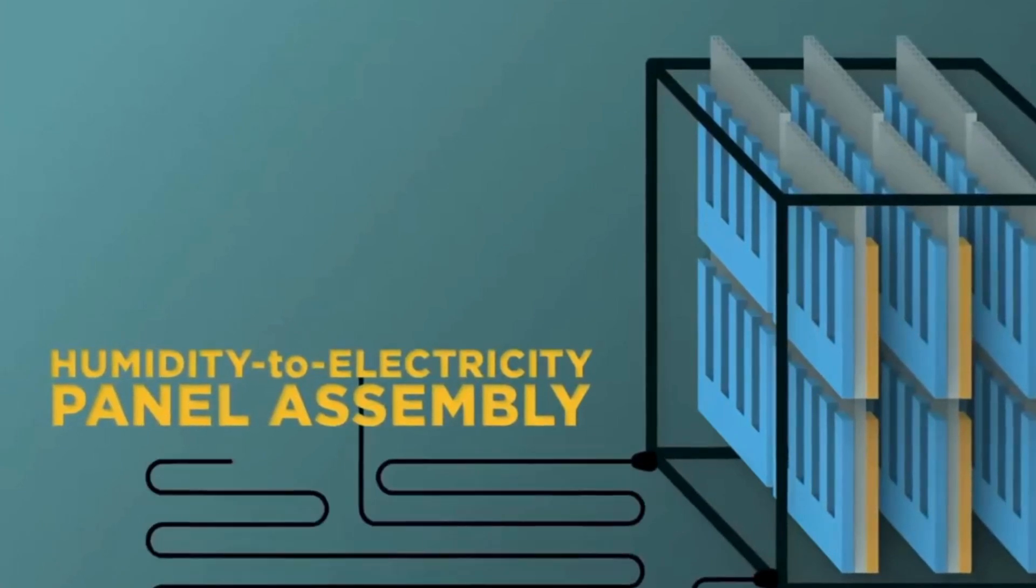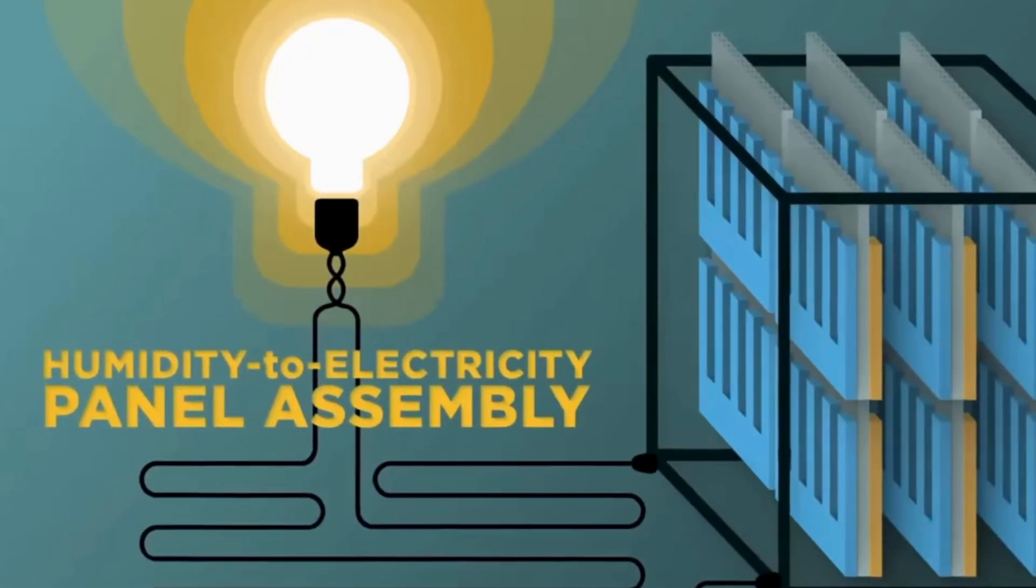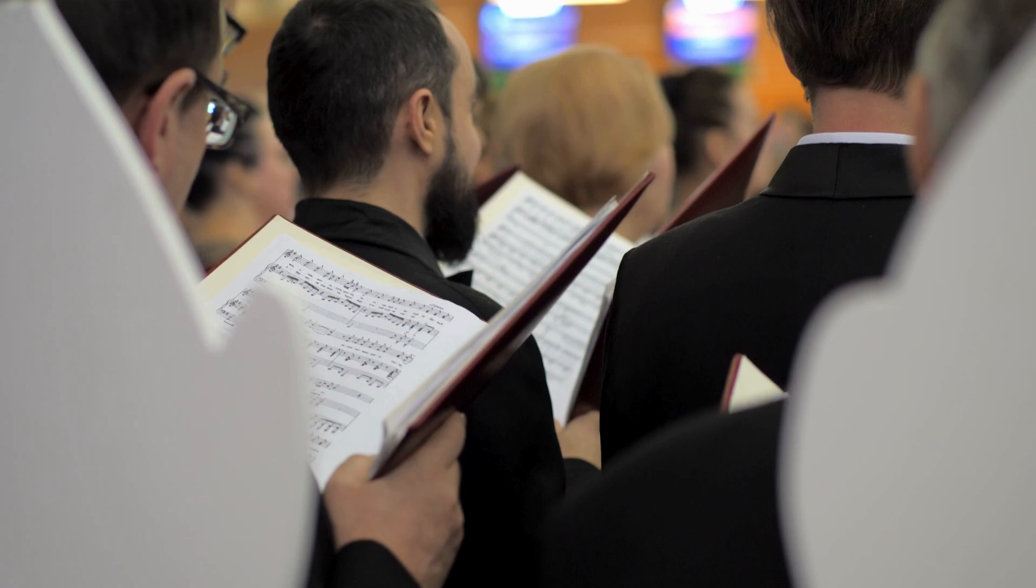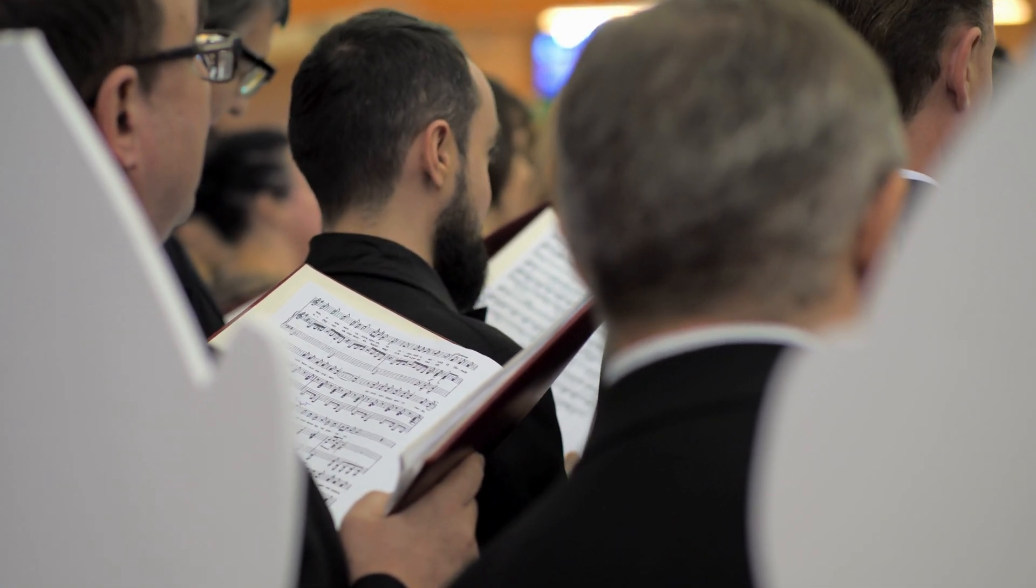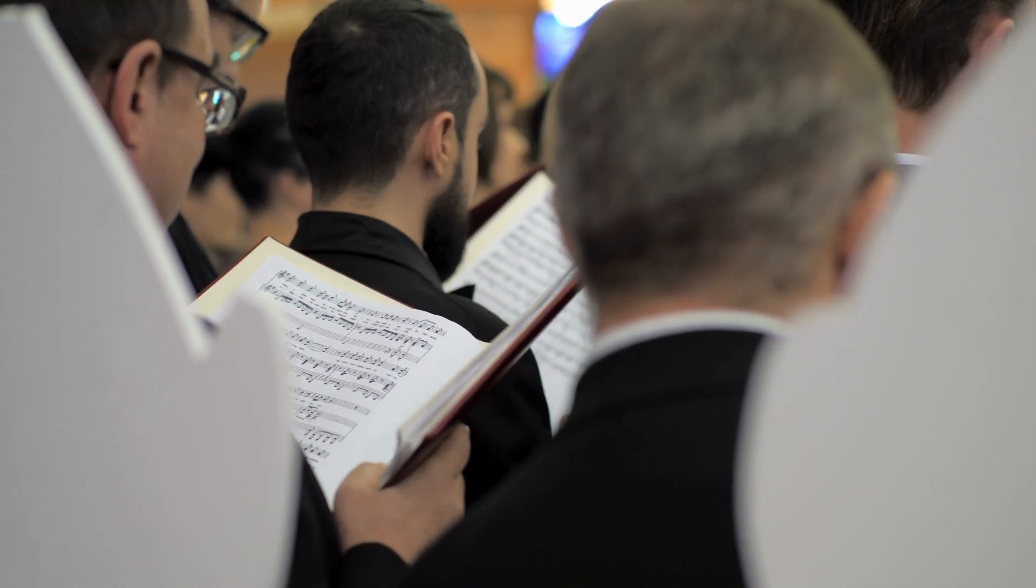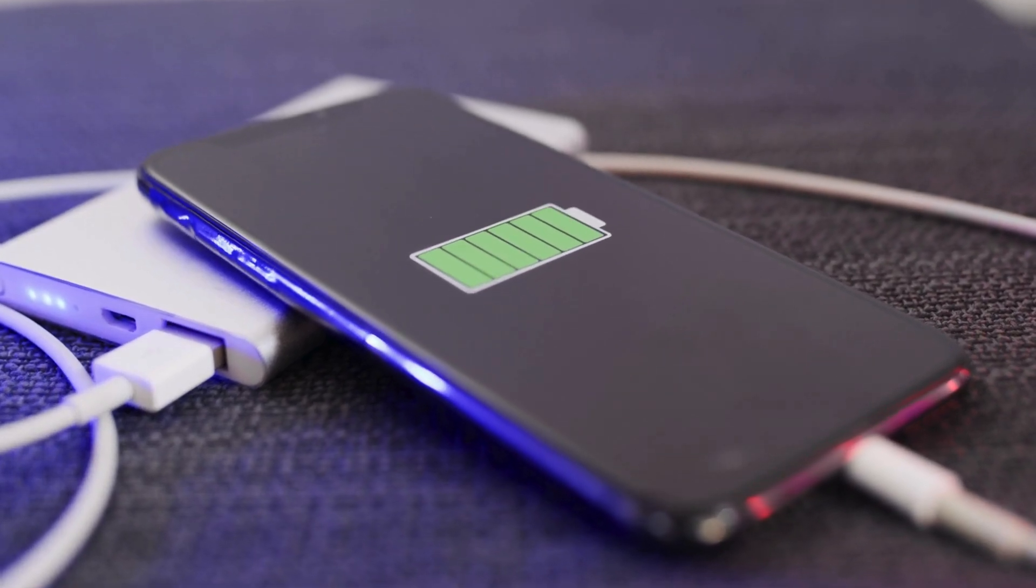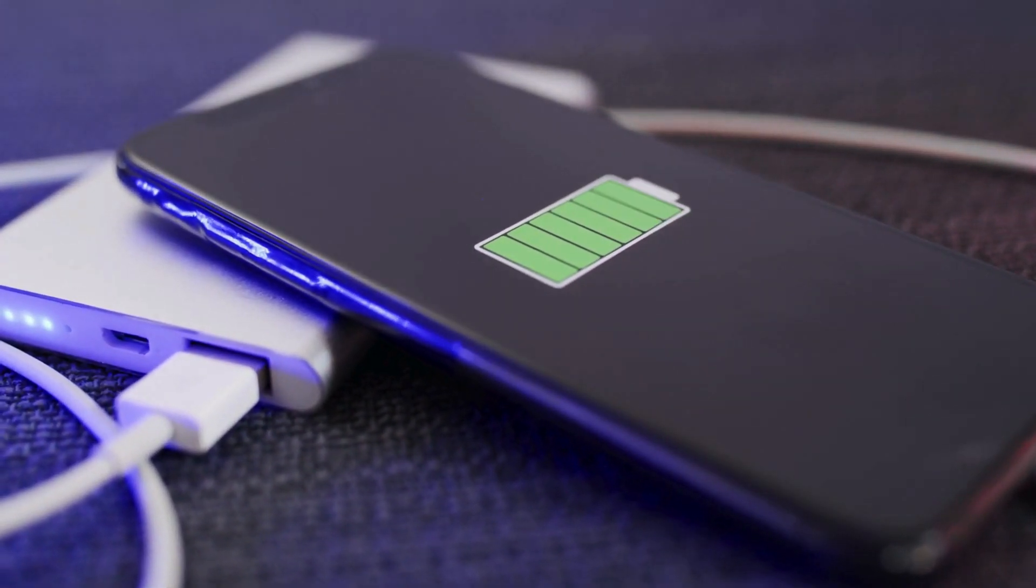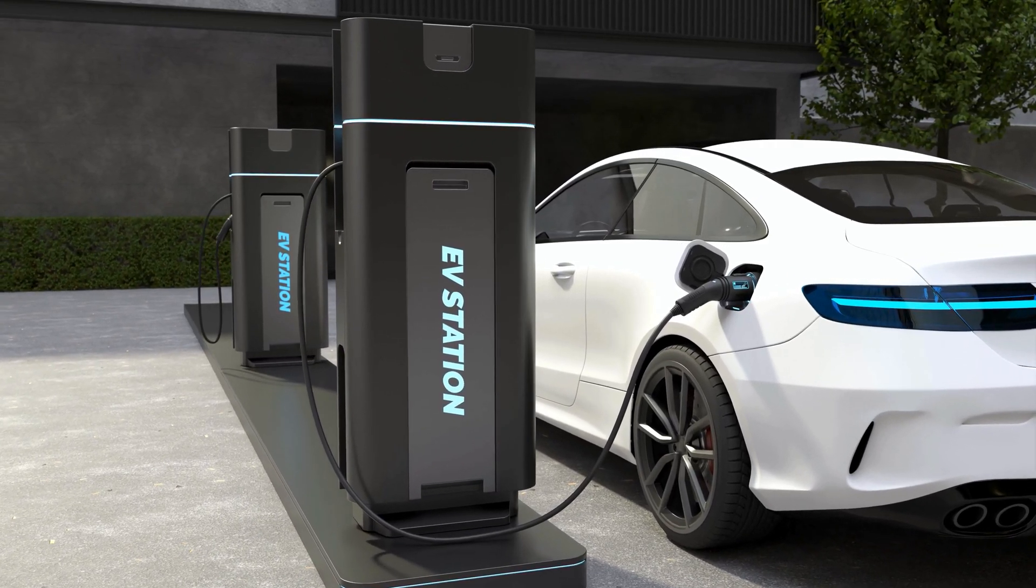Despite the groundbreaking nature of the UMass AirGen device, it currently produces only a microwatt of electricity, sufficient to light up a single LED pixel, but not enough for the broader energy demands of our world. Yet, its small output masks its vast potential. Like a chorus created from individual voices, connecting multiple devices could generate enough power from air moisture to meet much larger energy needs, suggesting a scalable solution to our energy challenges.